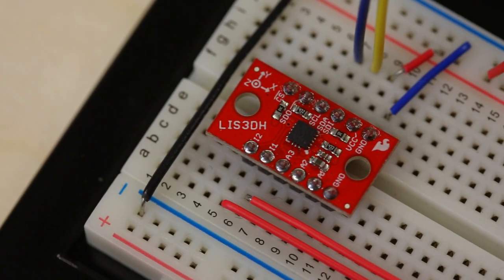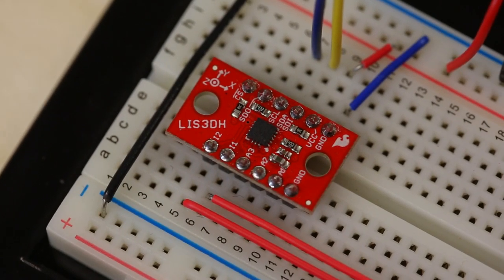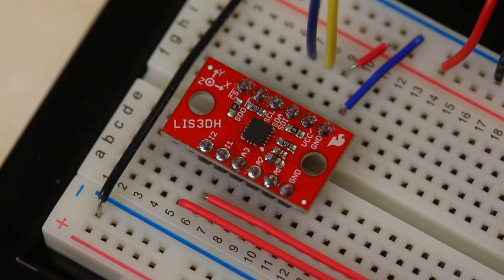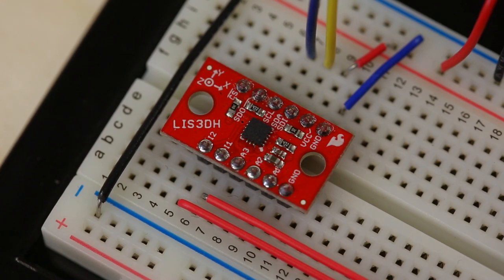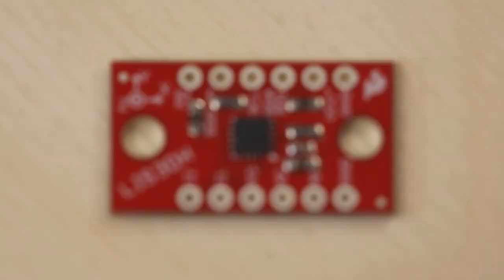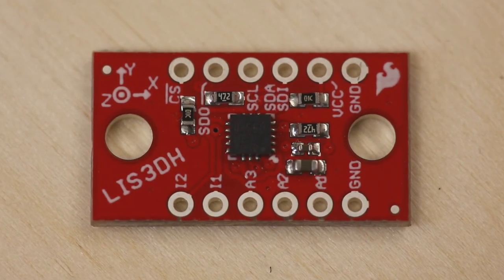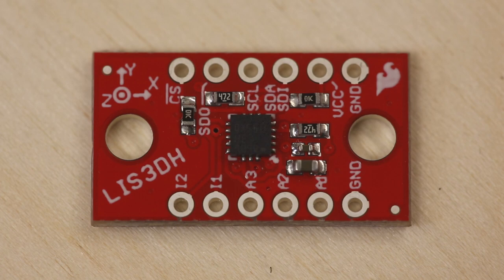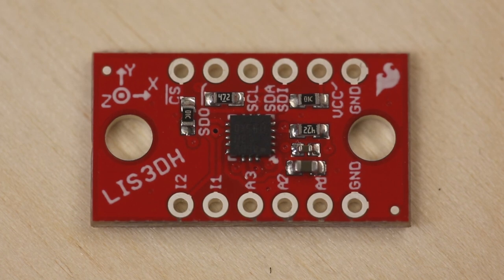The LIS-3DH is an itty-bitty 3-axis accelerometer classified as 3DOF, or 3 degrees of freedom, that can add motion and free-fall detection to your project. This board operates over I2C or SPI digital output interface, making the device particularly suitable for interfacing with a microcontroller.